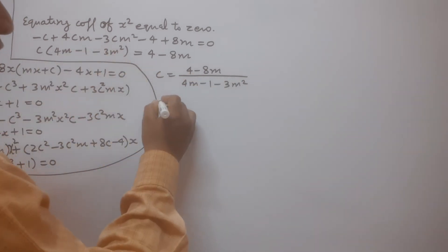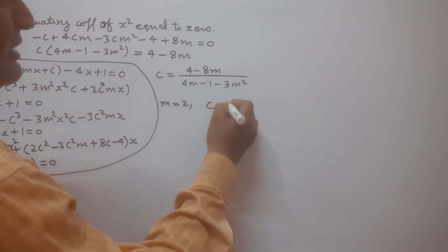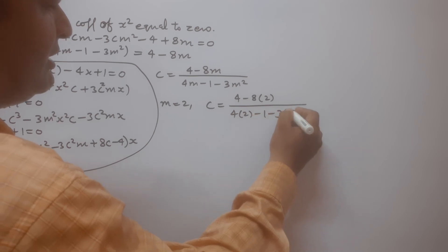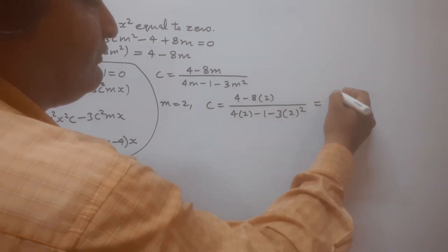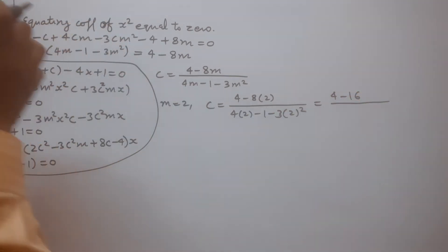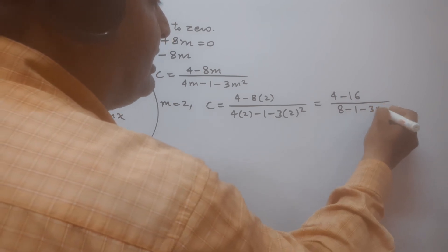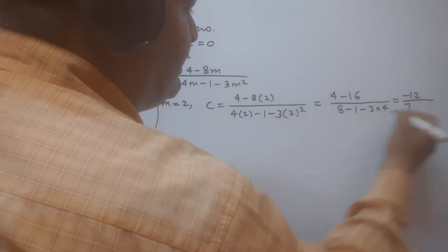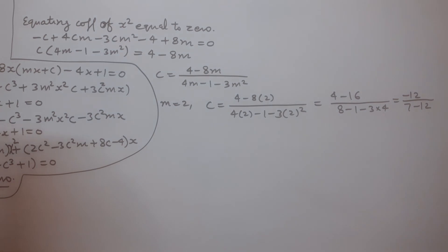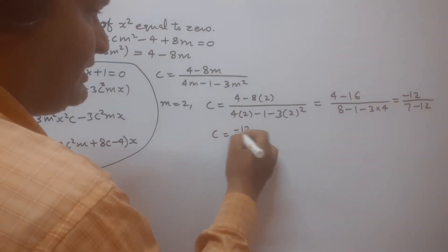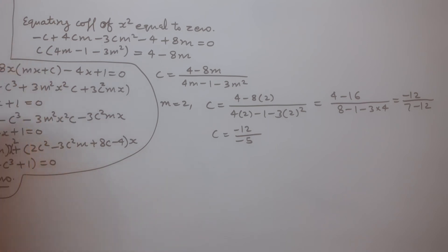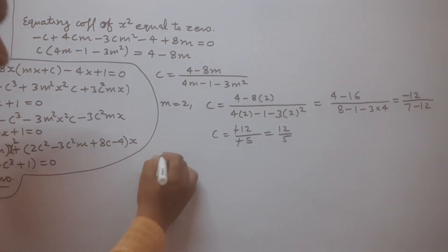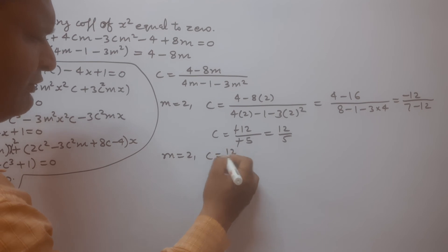Putting m = 2 in this equation: c = (4 - 8×2) / (4×2 - 1 - 3×2²) = (4 - 16) / (8 - 1 - 12) = -12 / (-5). The negatives cancel, giving c = 12/5. So for m = 2, we get c = 12/5.